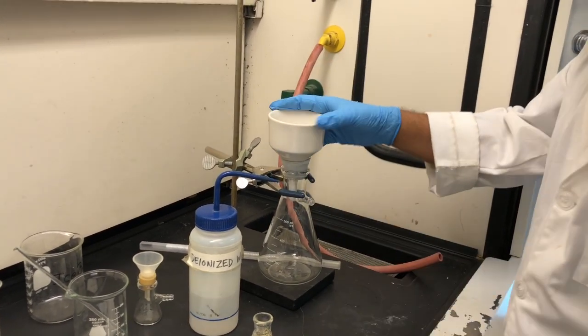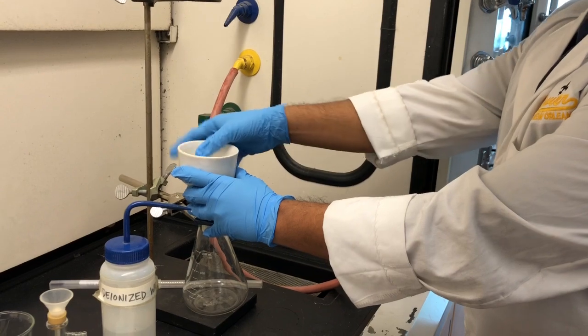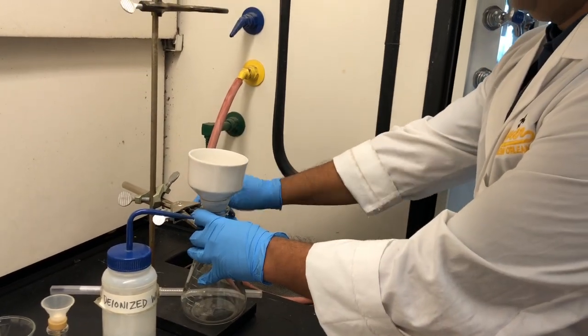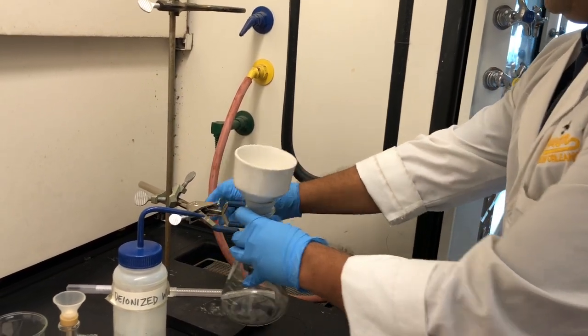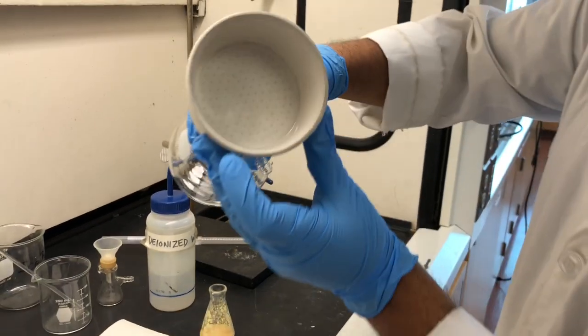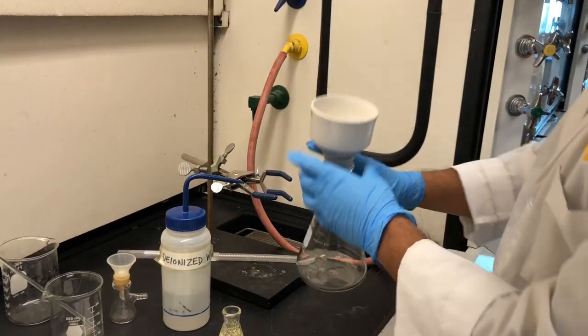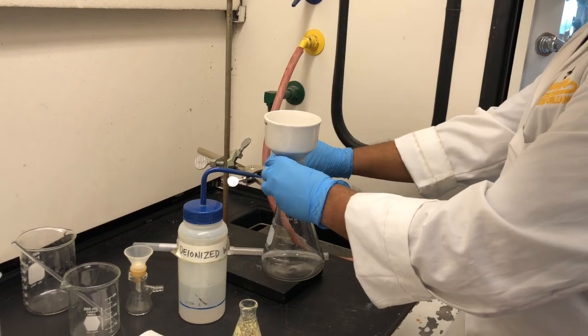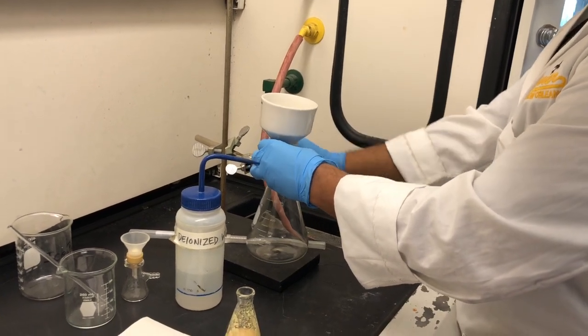Second, you need to make sure the paper covers all the holes of the Bushner flask. You can see that it is covering and it is sticking nicely to the base of the Bushner funnel.